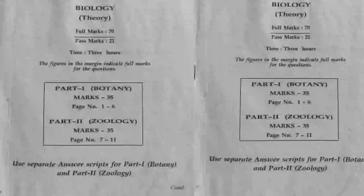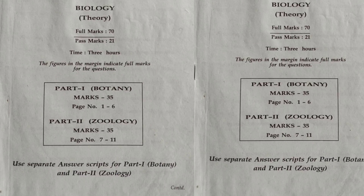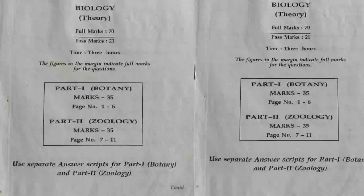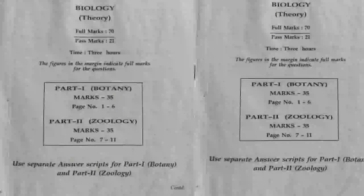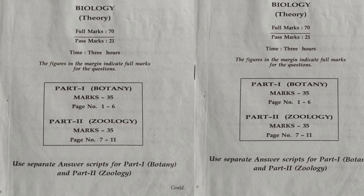Hello students, today I am going to discuss your biology paper of 2019 by Assam Higher Secondary Education Council. As we already know, the biology paper contains two parts: botany and zoology. The botany part will contain 35 marks and the zoology part will contain the rest of 35 marks in theory syllabus. First, I am going to discuss the botany part of the 2019 biology paper.